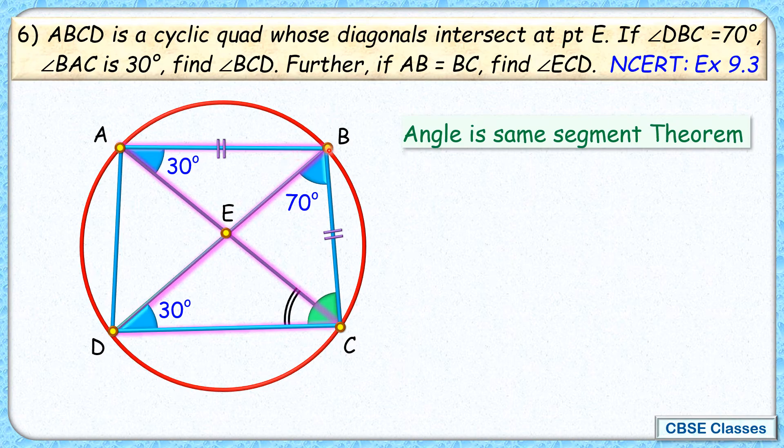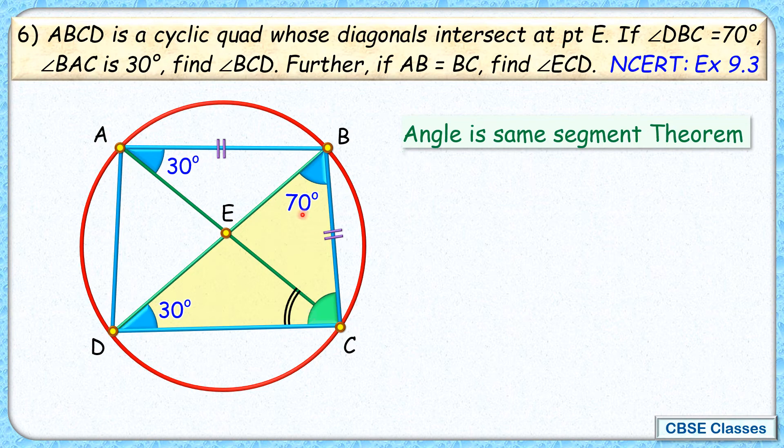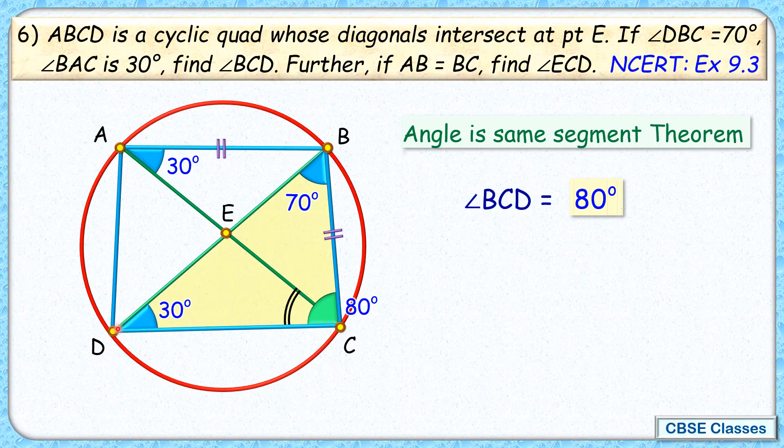Now if you look at triangle BDC, in this triangle BDC, applying the angle sum property, we will get this green angle as 180 minus 70 minus 30, or 80 degrees. And thus, this is one of the angles we have to find. So angle BCD is 80 degrees.